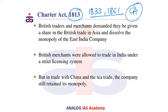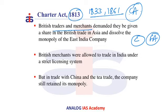The main purpose of enacting this act by the British Parliament was due to Napoleon Bonaparte's continental system in Europe. This system prohibited the import of British goods into French allies in Europe, leading to huge losses for merchants and British traders. Therefore, British traders and merchants demanded a share in British trade in Asia, particularly India, thereby dissolving or restricting the monopoly of the English East India Company, which held sole trading rights.